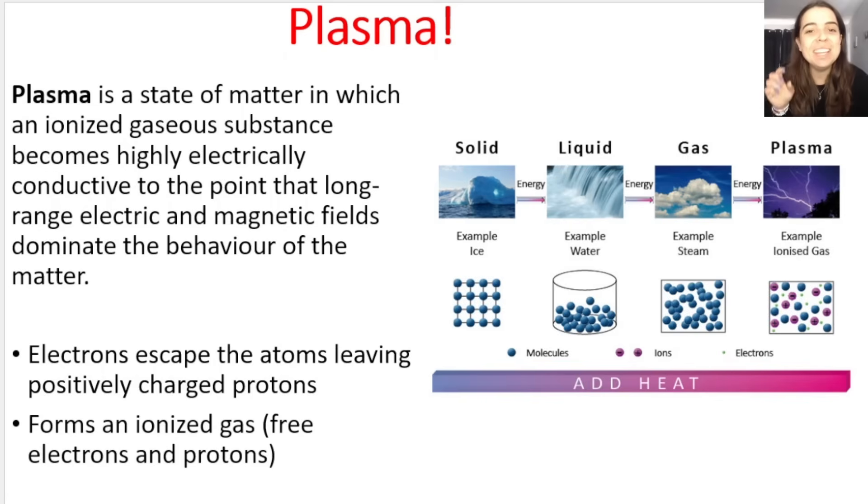Just so you know, plasma is another phase of matter. It's a state of matter in which gaseous substances become ionized. And basically, the electrons escape from the atoms. And it leaves positively charged protons. Free electrons, free protons. That is where we get the ionized gas phase. And it's called plasma.